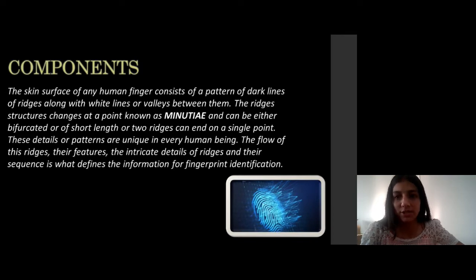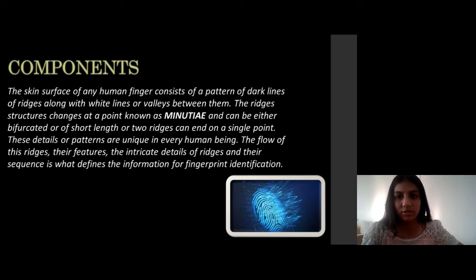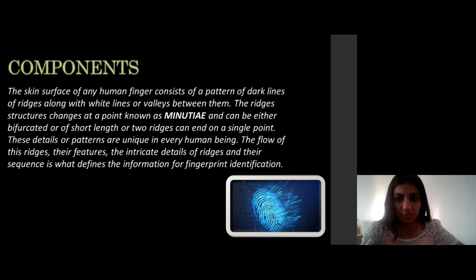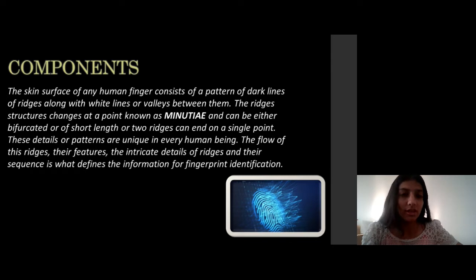Now, what are the components of fingerprinting? Fingerprinting is basically composed of dark lines called ridges, which provide different patterns. These are the different patterns known as ridge characteristics and large nature. There are also white lines which are found between the dark lines, and these have their values.